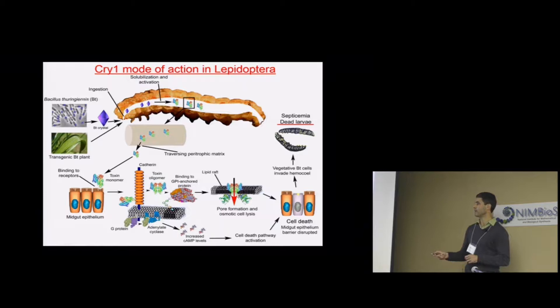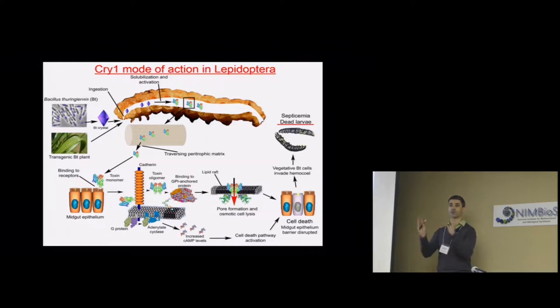One of these receptors is a family of proteins called cadherins. These cadherins have a transmembrane domain, so they're anchored on the membrane, sticking out on the surface. The binding of the toxin monomer to this cadherin results in further processing of the toxin, so that a toxin oligomer is formed.